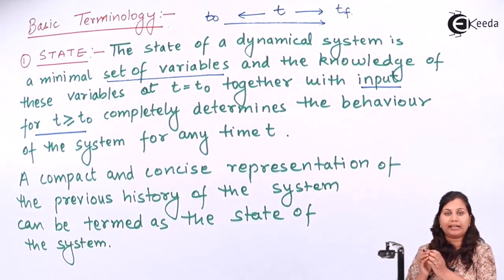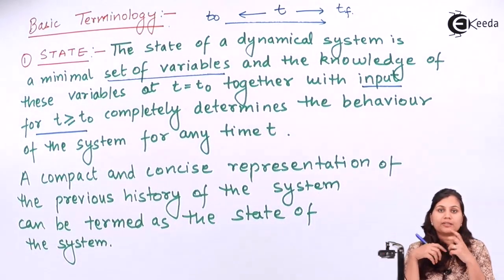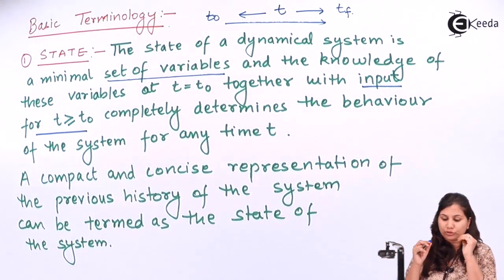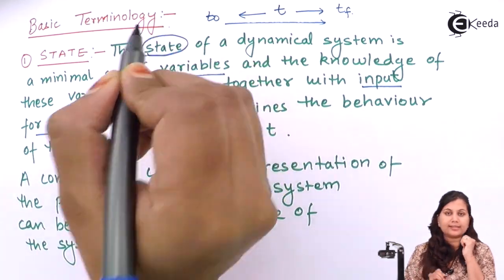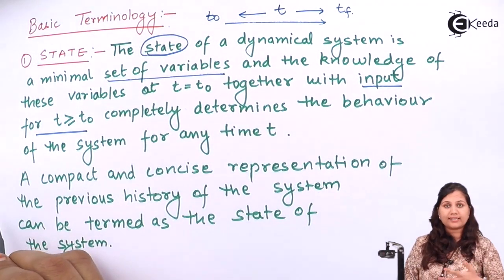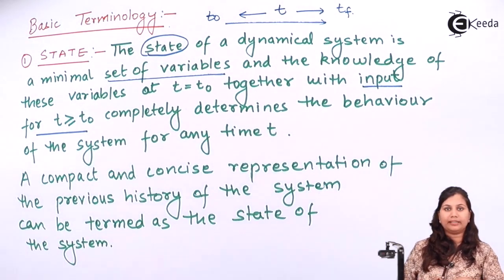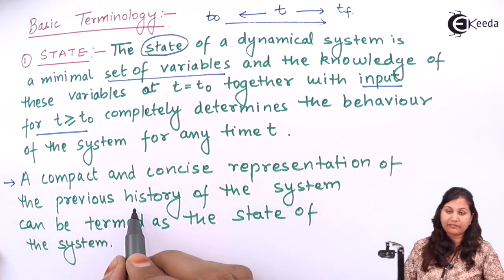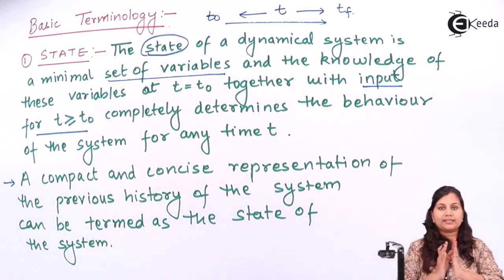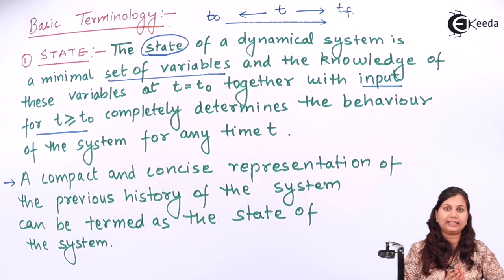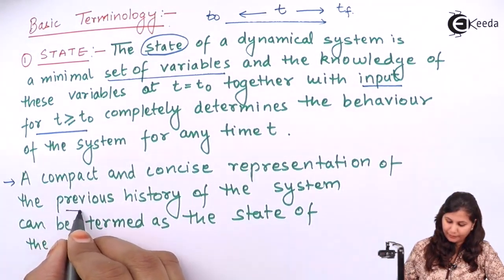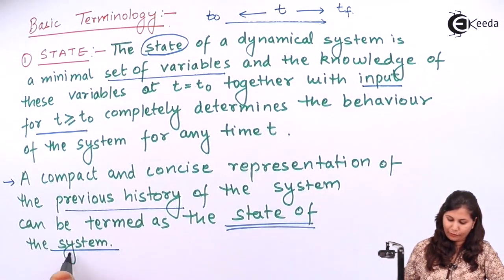Together, the value of the input and the value of the state variables at the initial time define the complete behavior of the system for any time T. This is known as the state of the system. Simply put, the state is a compact and concise representation of the previous history of the system — the previous history can be termed as the state of the system.